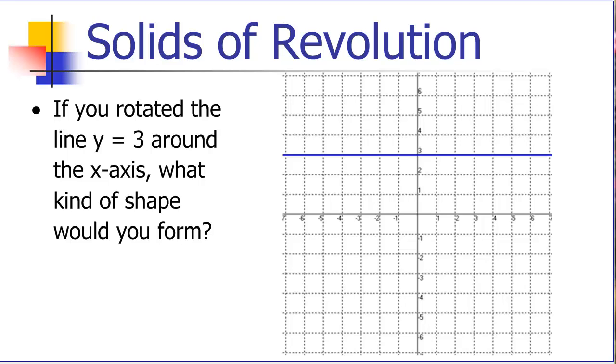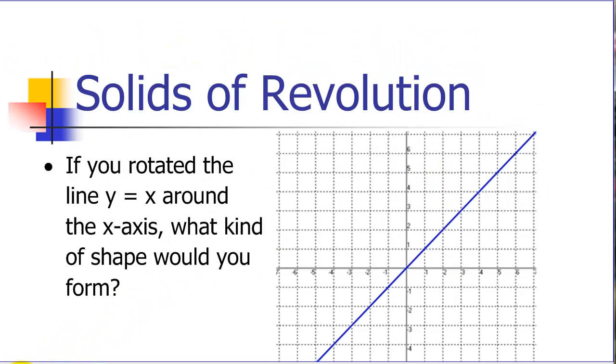For the types of solids we can find volumes, they're called solids of revolution because we will be rotating a function or curve around the x-axis. If we rotate this line at y equals 3 around the x-axis, what kind of shape do you see? We are going to be forming a cylinder. We won't be finding the volume of this infinite cylinder, but we would be starting at some x value and going to some other value, so we could use this to find the volume of a can.